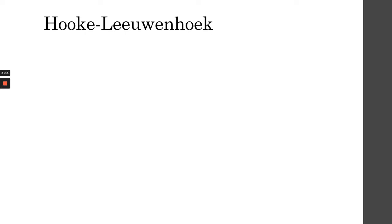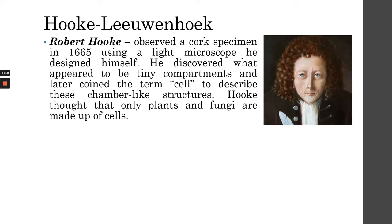Let's start with two scientists: Robert Hooke and Anton von Leeuwenhoek. Robert Hooke researched a cork specimen in 1665 using his own designed light microscope. He saw tiny compartments on the cork and called them cells. He's the first person to coin the term 'cell' to describe the chamber-like structures he saw. Hooke made various drawings of that specimen and initially thought that only plants and fungi are made out of cells.